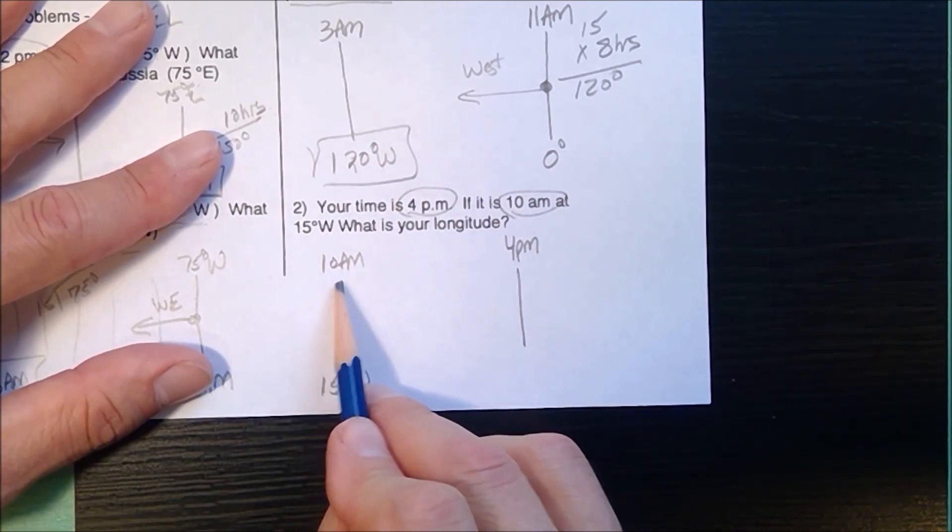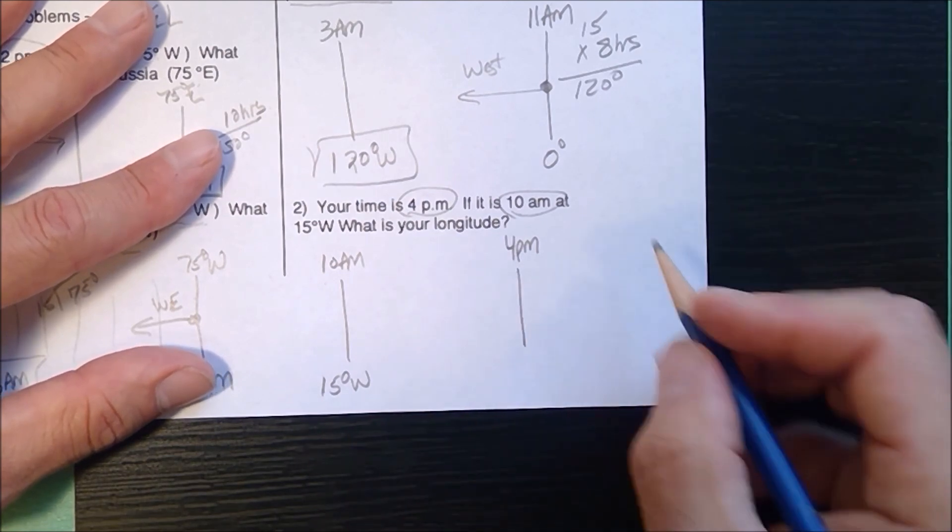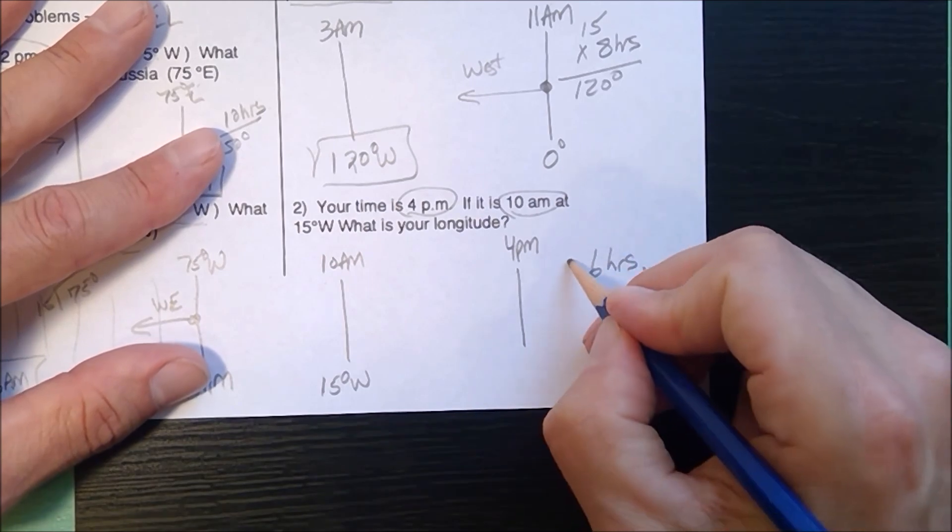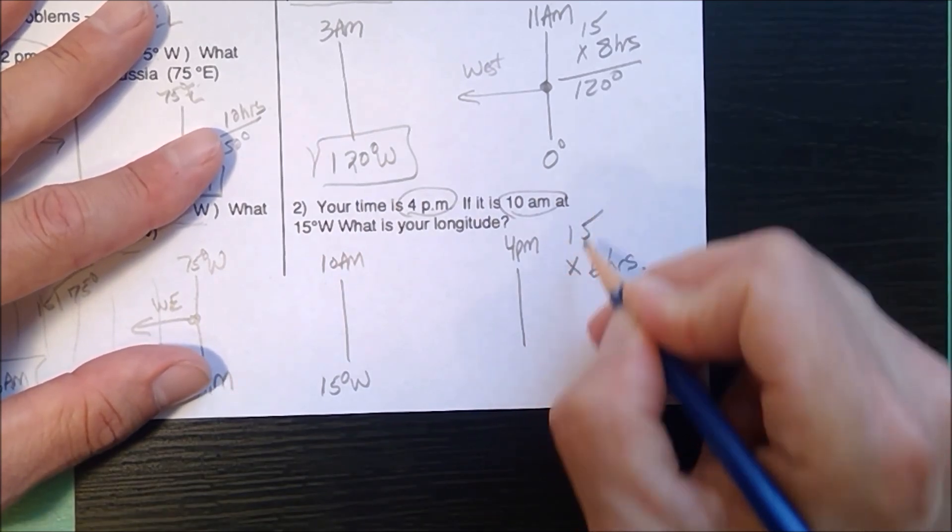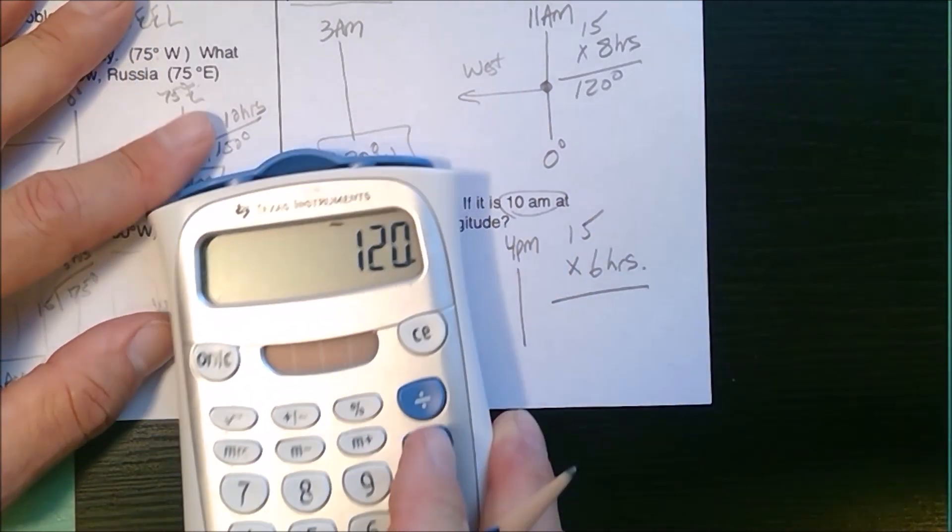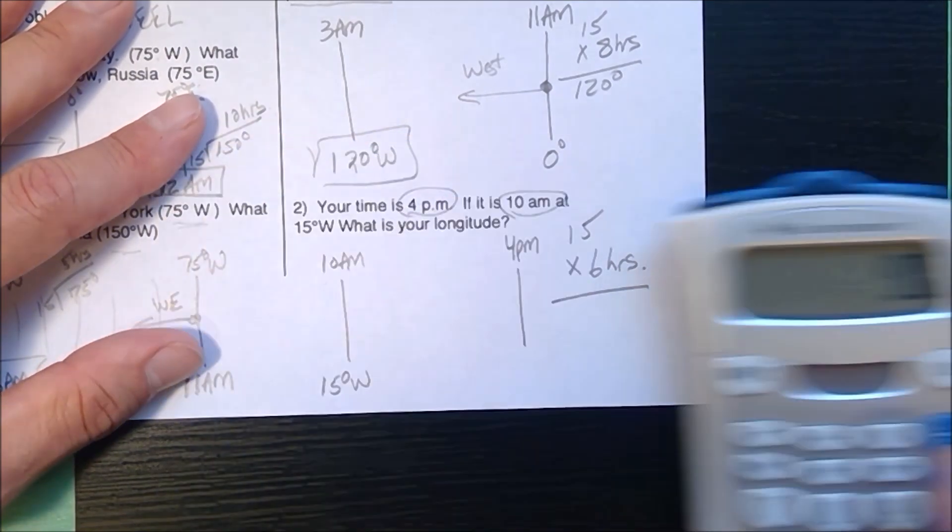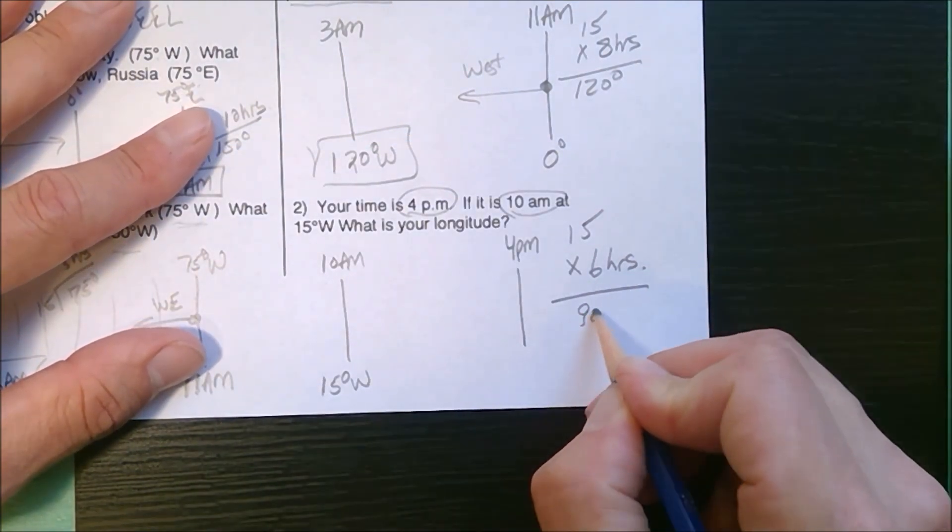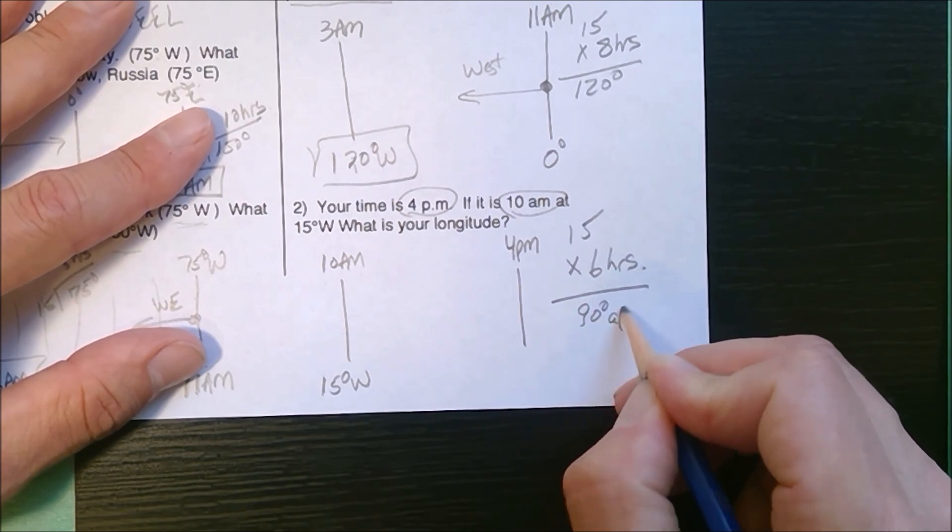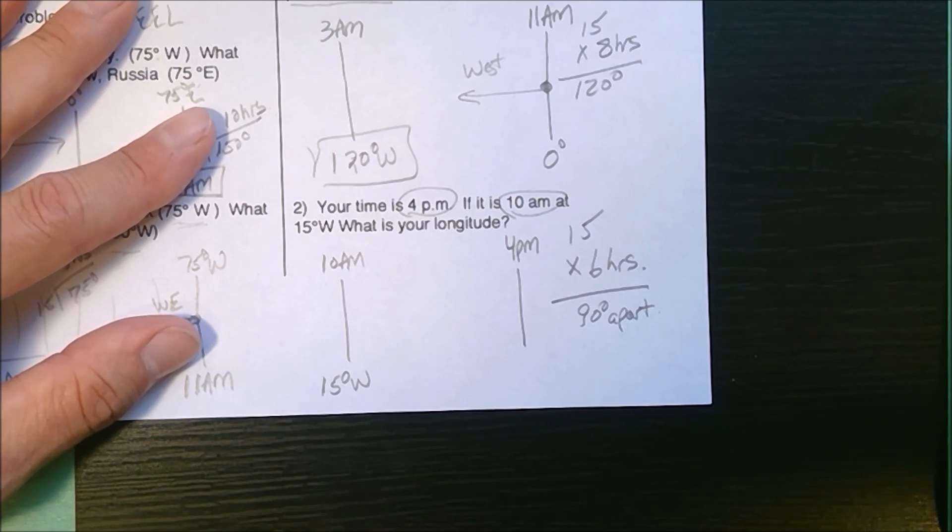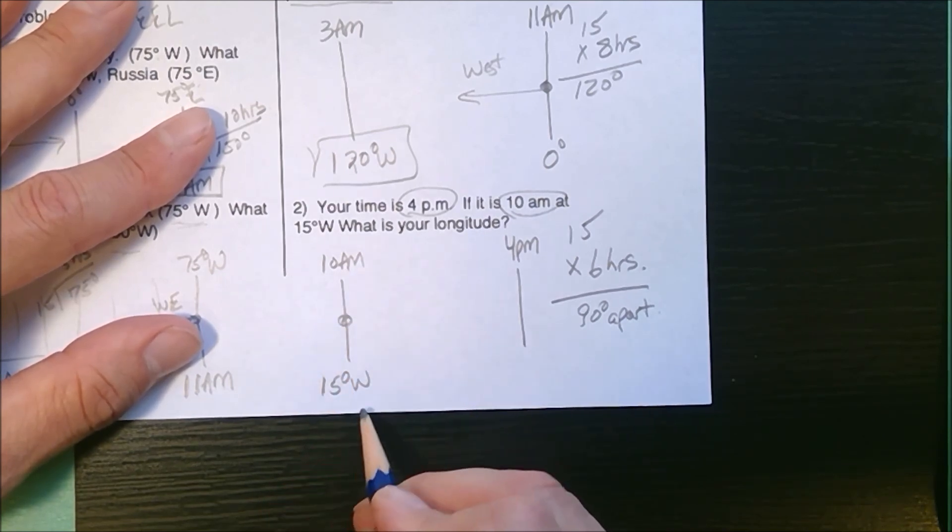From 10 o'clock to 4 o'clock is six hours apart. My first step is I'm going to multiply my six hours by my 15 degrees per hour, and I know these are 90 degrees apart. They're separated by 90 degrees of longitude. I'm starting here, beginning west of the prime meridian, and I'm going to travel east.